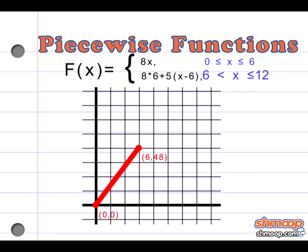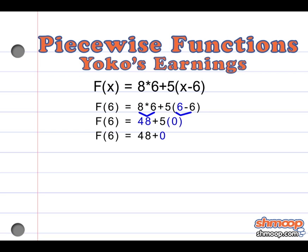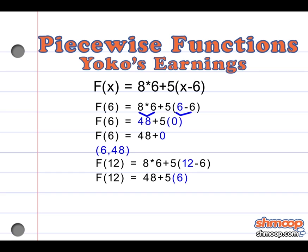For the second line segment, when x is greater than 6 and less than or equal to 12, we plug in 6 as x: 8 times 6 is 48, plus 5 times 0, so 48 plus 0 equals 48. So our first endpoint is (6, 48). To get the endpoint of the last piece, we plug in 12: 8 times 6 plus 5 times (12 minus 6) gives us 48 plus 5 times 6, and 5 times 6 is 30, so 48 plus 30 equals 78. So our endpoint for the second line segment is (12, 78).